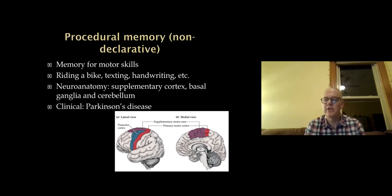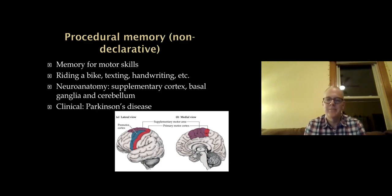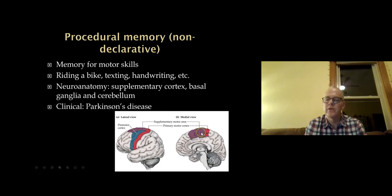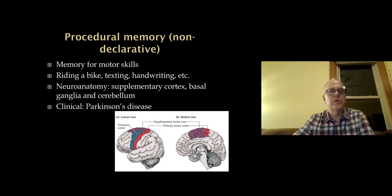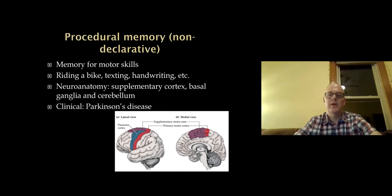Procedural memory is a non-declarative memory — not consciously evoked — referring to memory for motor skills: riding a bike, texting, handwriting, playing a musical instrument. The neuroanatomy of this is very different. The supplementary motor cortex, basal ganglia, and cerebellum are involved in procedural memory. Patients with Parkinson's disease, for example, may lose procedural memory, and some of these motor skills will be impaired.